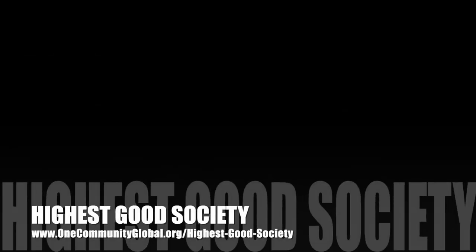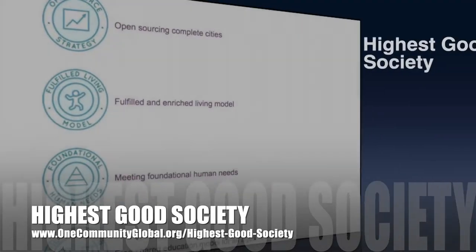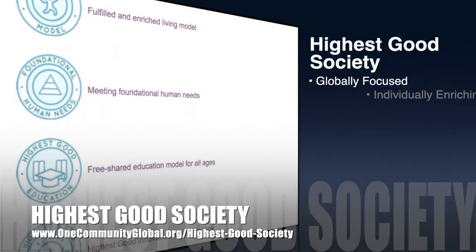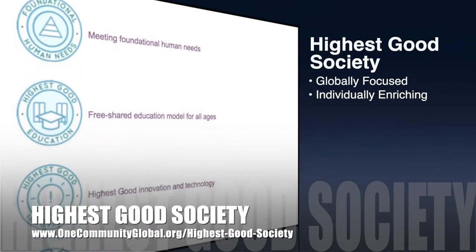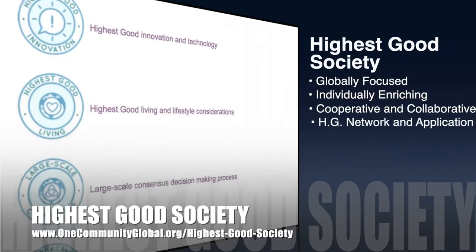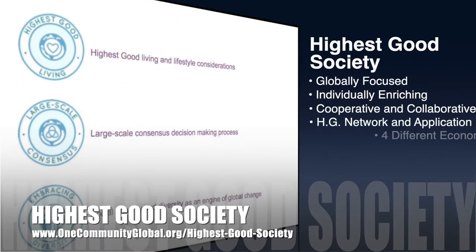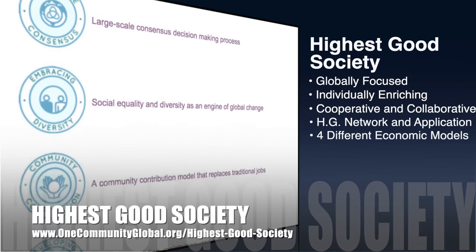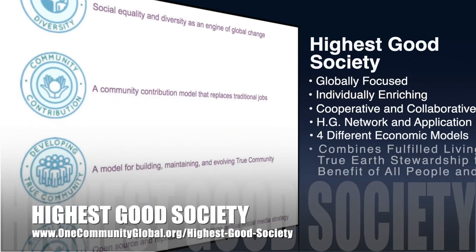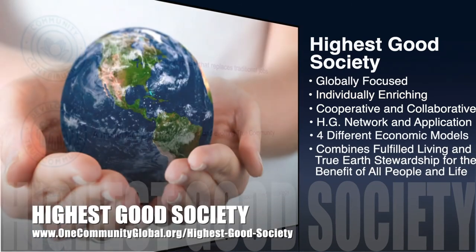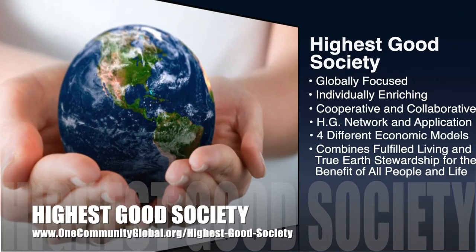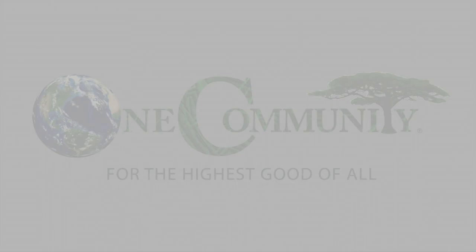The One Community approach to highest good society is globally focused, individually enriching, cooperative and collaborative. It includes a highest good network and application, four different economic models, and combines fulfilled living and true earth stewardship for the benefit of all people and all life on this planet.